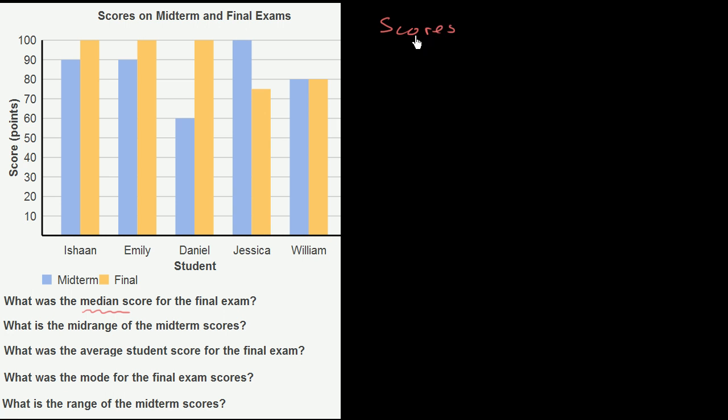Scores on the final exam: Ishan got 100. Remember, the yellow bar is the final exam. Emily also got 100. Looks like it was an easy final exam. Daniel also got 100. Jessica got 75. William got 80.